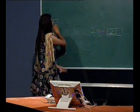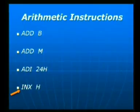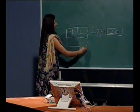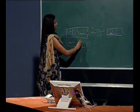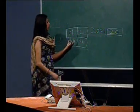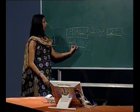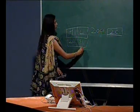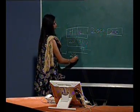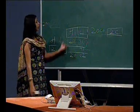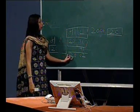Next is INX H. In this case, the data in registers H and L will be incremented. For example, if the contents of register pair HL are 20 and 01, after the execution of this instruction, it will be added with 1, resulting in 2002. After the execution of this instruction, the result of the HL pair will be 2002.